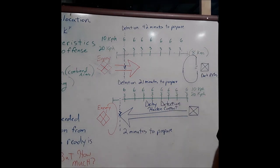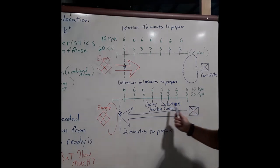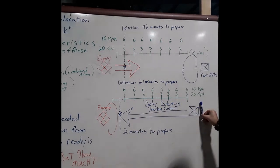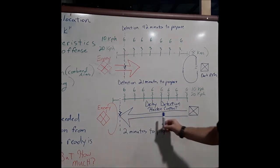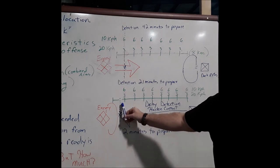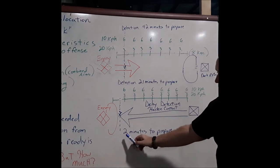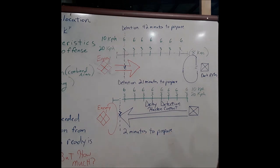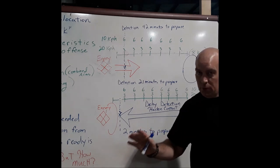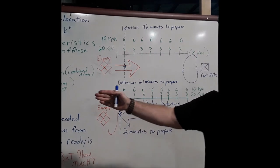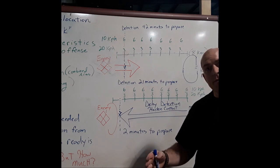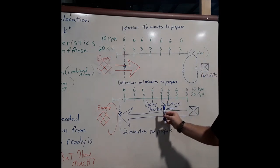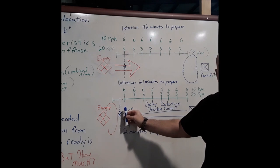Now let's turn it around and see how we use this in the offense. We're now in the attack, again eight kilometers away. If we're able to move in such a way as to delay the enemy's detection — and they don't detect us until we're less than three-quarters of a kilometer out — that gives them only two minutes to prepare. Two minutes to prepare, and most likely they are in a condition other than ready to fight.